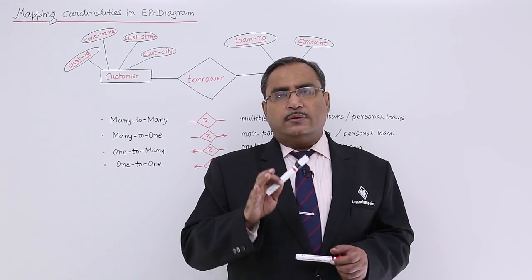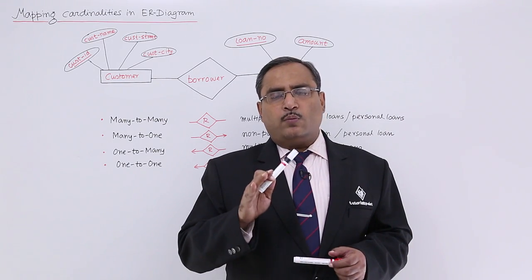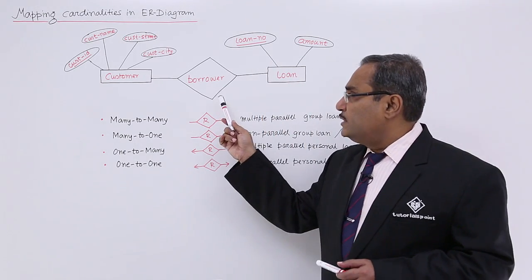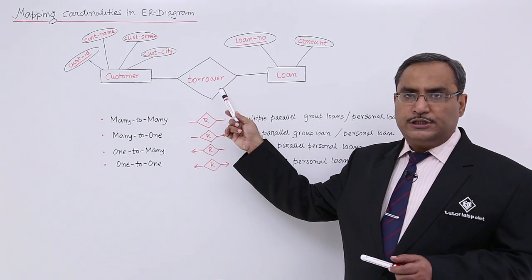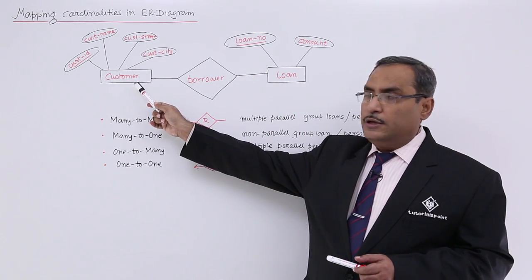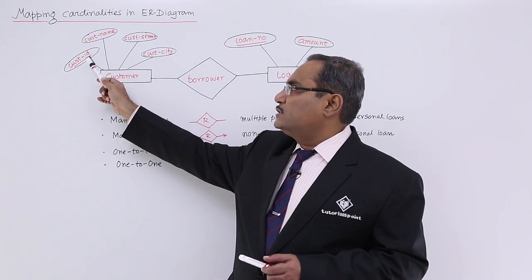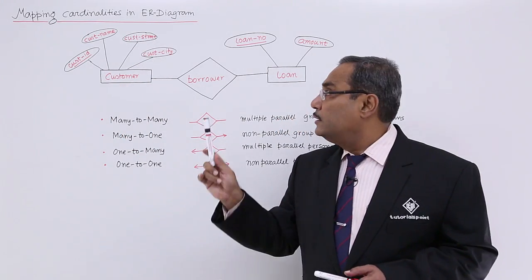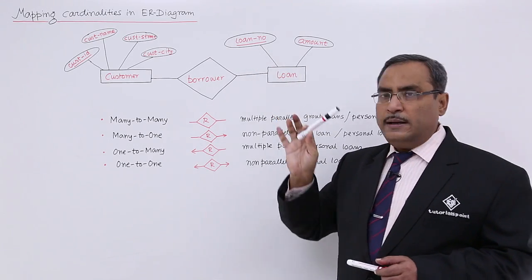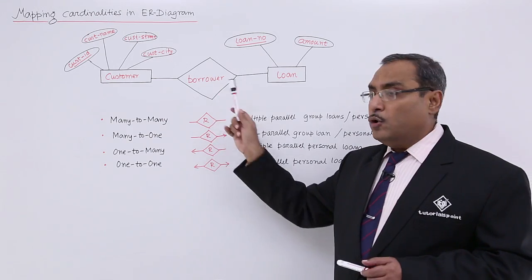Let us discuss all of them one by one with proper examples. Here you can see this is a borrower relationship. This is a loan entity and this is a customer entity. The set of attributes connected to the customer entity includes Customer ID as the primary attribute. Against the loan entity, these are the set of attributes, and Loan Number is the primary attribute because it is underlined. Borrower is the relationship.